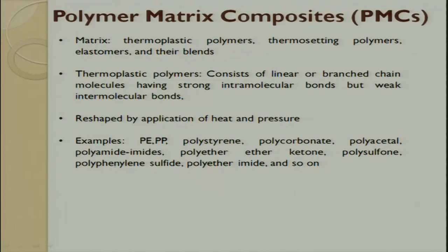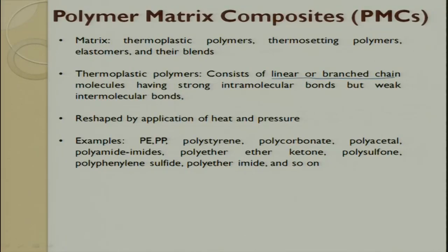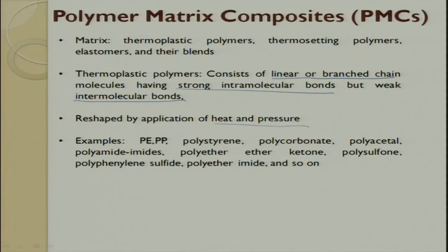When we talk about matrix types, we have thermoplastic polymers, thermosetting polymers, elastomers, and blends. Today we have matrices where a thermoset is mixed with thermoplast or elastomer to meet requirements. Thermoplastic polymers consist of a linear or branched chain molecule having strong intramolecular bond but weak intermolecular bond — intra means within the same, inter means between two different particles. They can be reshaped by application of heat and pressure. Examples include PE, PP, polystyrene, polycarbonate, and others.